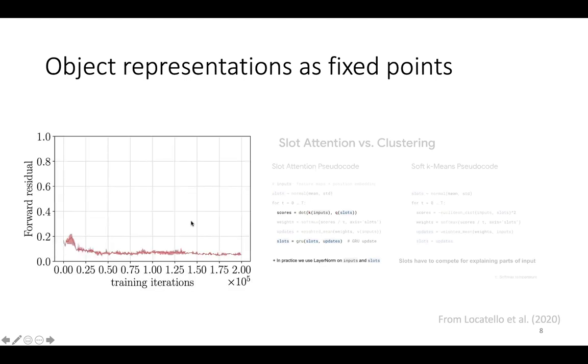Empirically, however, we see that the forward residual of the slots remains relatively bounded, which suggests that slot attention can be considered an instance of a deep equilibrium model, which are trained with implicit differentiation.